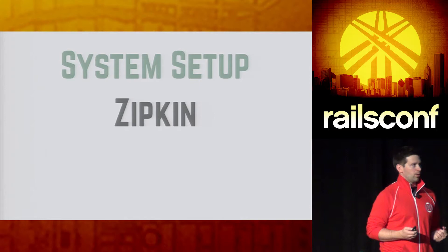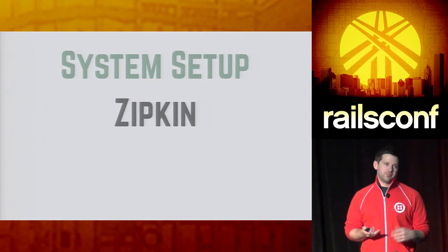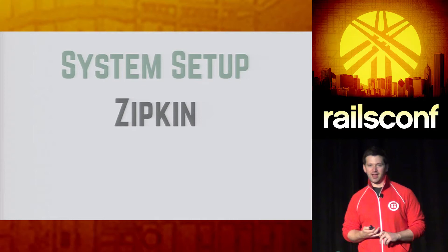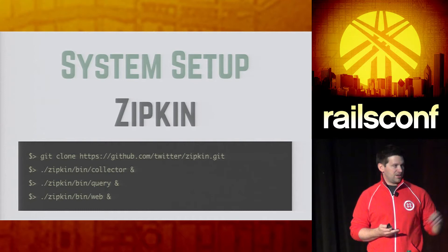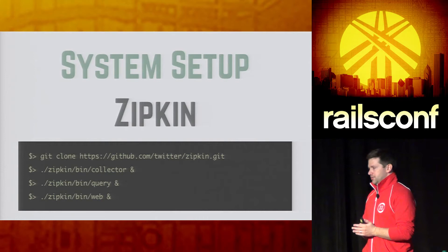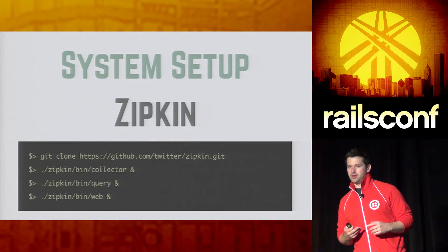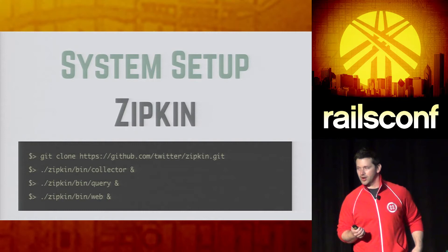The initial setup is installing Zipkin — pretty straightforward. You do need to have a JVM running and Scala installed. Both are easy — everyone's probably installed a JVM, and Scala is incredibly easy to install. Scala does take forever to actually compile all its services, but that's a bit of a pain point. You can end up just cloning the Zipkin repo, and then each of those commands will start up each of the individual three services that are provided — the collector engine, the query engine, and the web engine separately, so you can put different services on different hosts depending on load on your system.